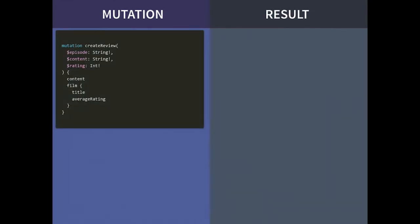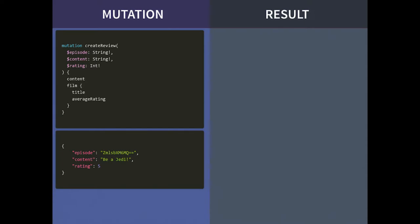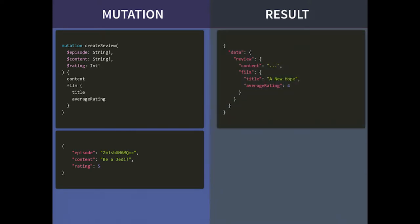Let's look at a mutation example: creating a review for episode three, sending the content and a rating of five. In the result, you get back 'data', then 'review' — which has a relationship with a film — and you can get anything from that movie, even drill down to all the characters if needed. You also see the average rating is four, so you're aware that sending a five increased it — and you can update your screen right away. A really fast interaction.